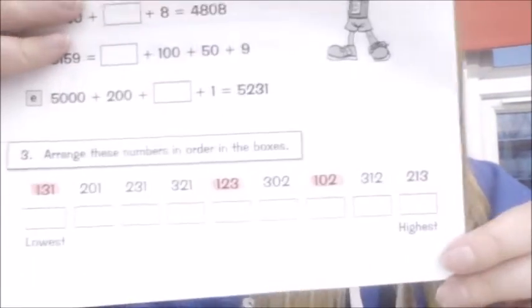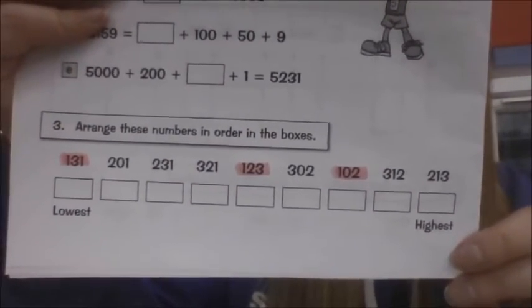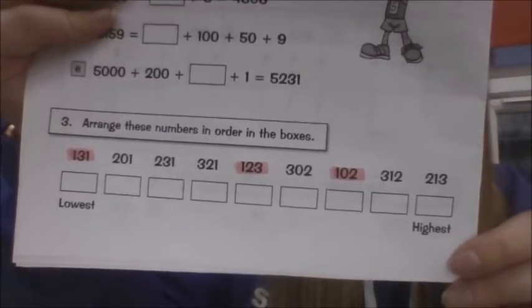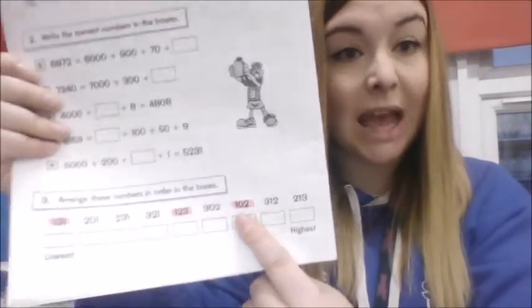So I've got the number 131 in my hundreds, 123 in my hundreds and 102 in my hundreds. And I've just marked those off in my book using a highlighter. And I'm going to look at those three numbers and think, which of those is the smallest? Now I know because 102 doesn't have any tens, that makes it my smallest. I'm going to add that in the box where it says lowest, 102.